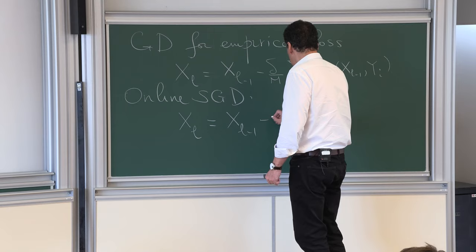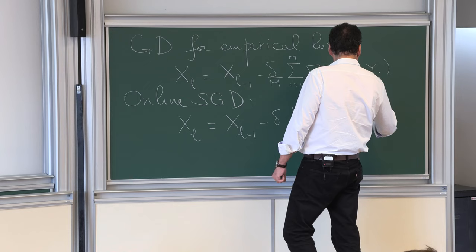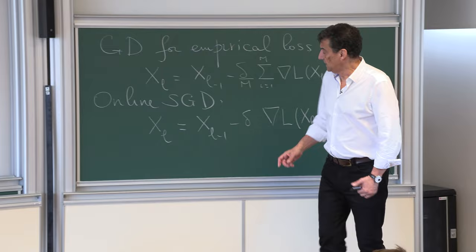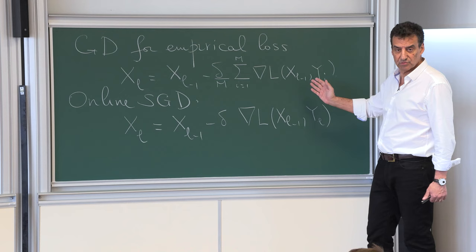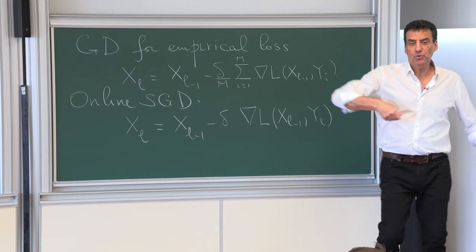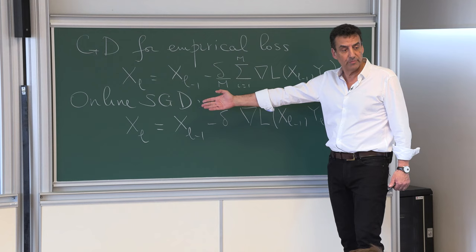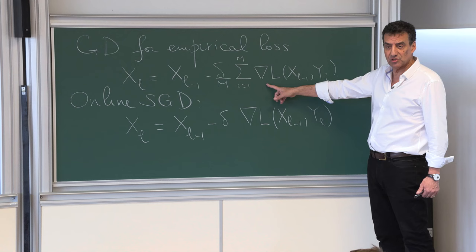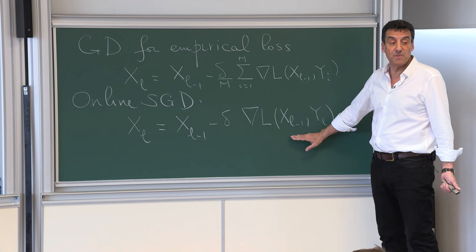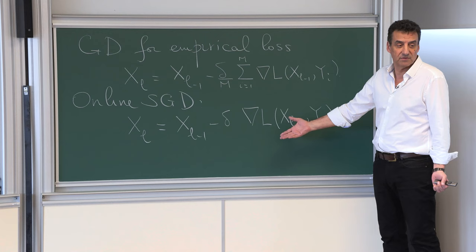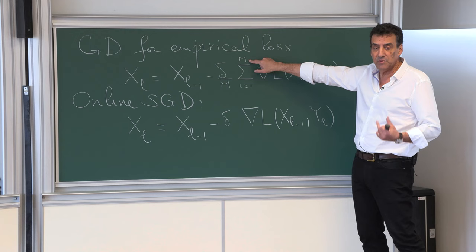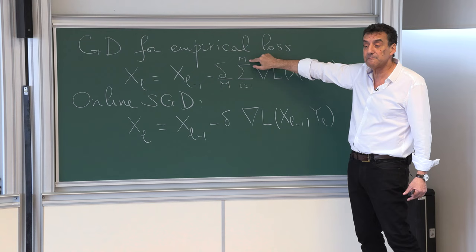Online SGD starts the same, but here you just use one data point rather than the full batch — that's why it's called online. I give you one data point; you use it immediately to do a step in your online algorithm. You could do something in between: a full batch uses all data from one to M; the absolute smallest batch uses one data point. A batch of size K would use K data points between one and M. That's called a mini-batch.